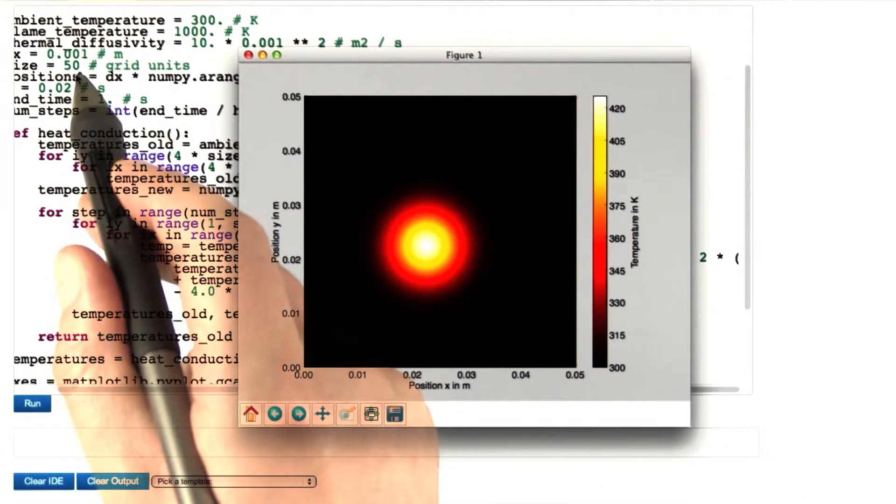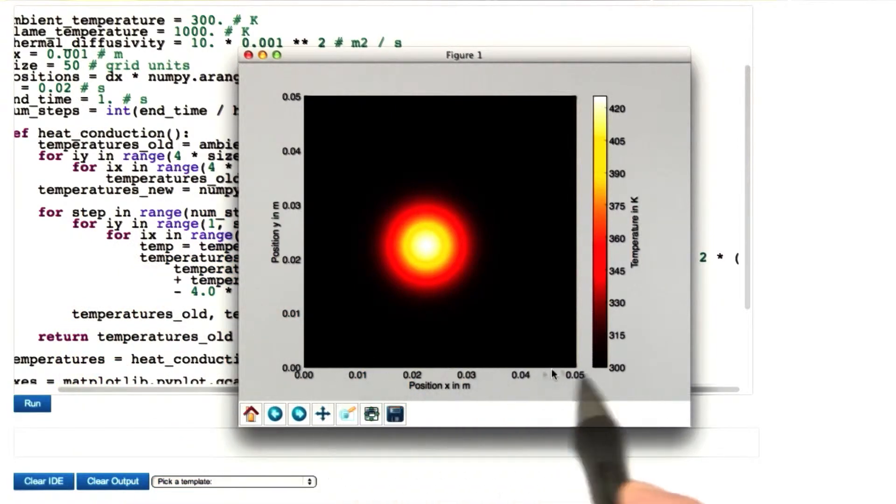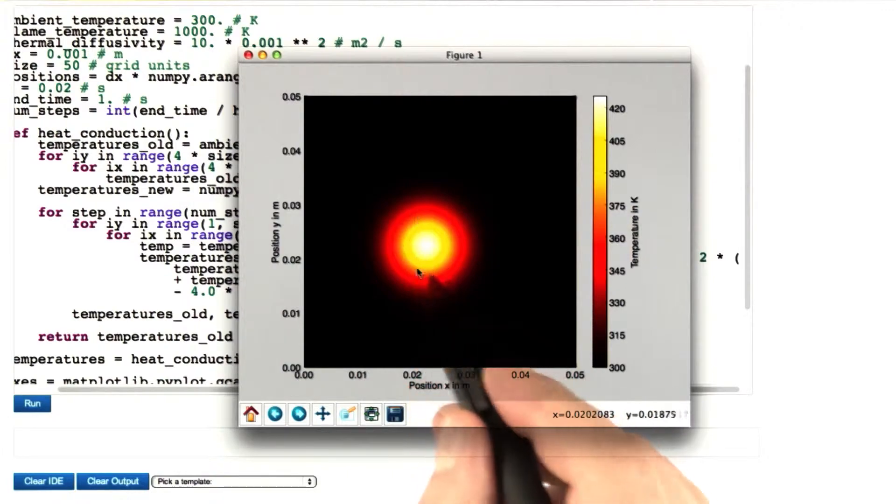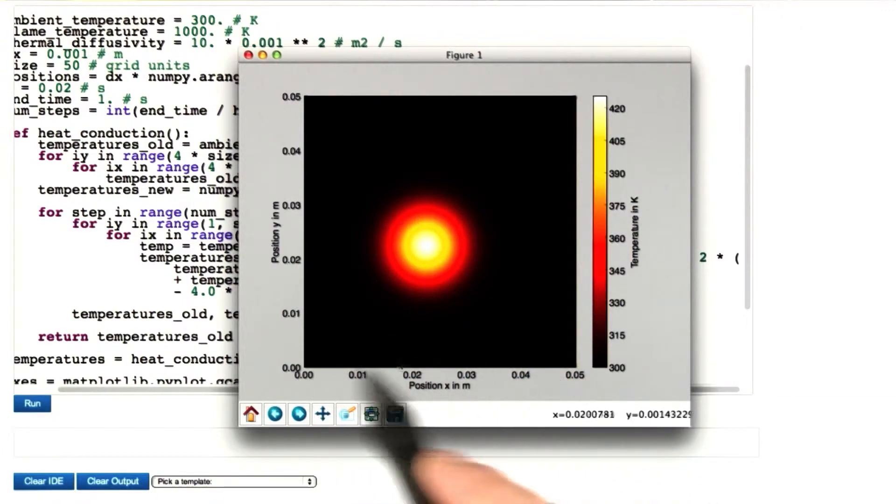In case you're wondering, we're using 50 steps from the left to the right and from the bottom to the top. How could we get such a smooth picture with just 50 times 50 values? The trick is interpolation.